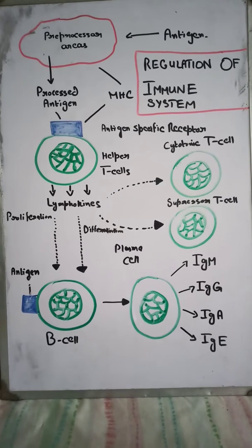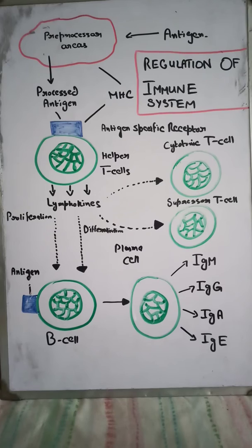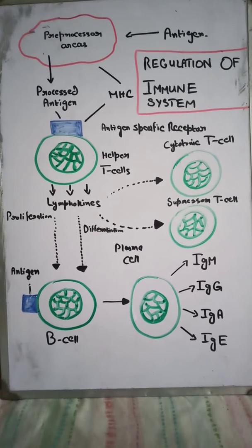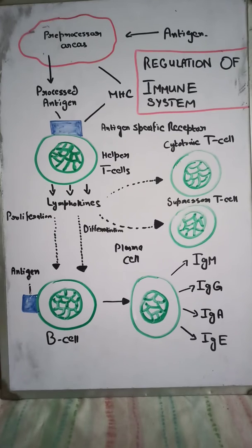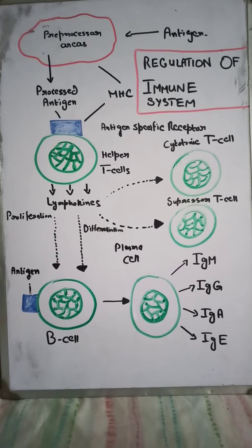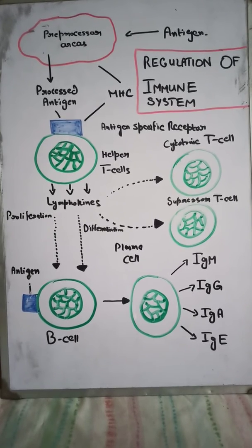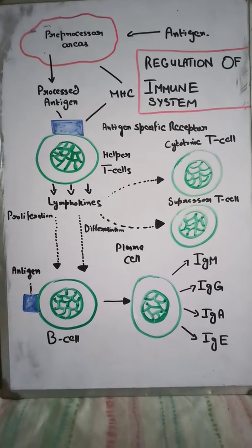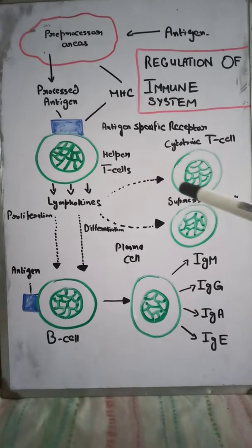The perforins punch round holes in the membrane of the target cell, causing direct destruction of the invading cell by sensitized lymphocytes. So cytotoxic T-cells have a major mechanism in the direct destruction of cells.